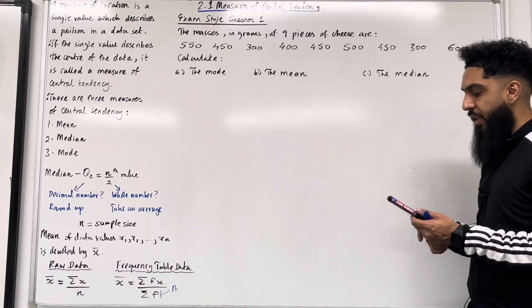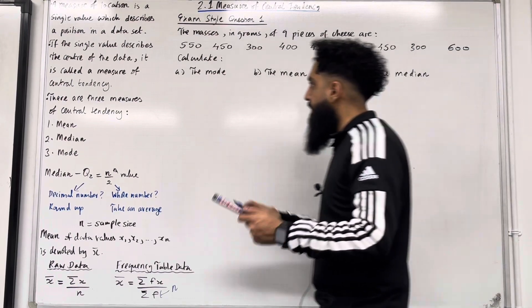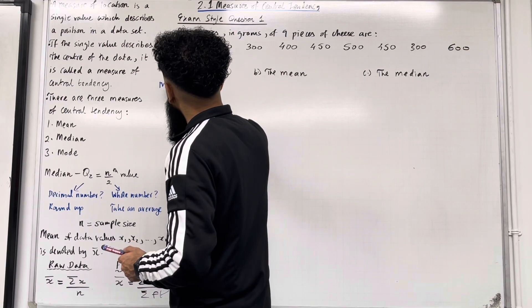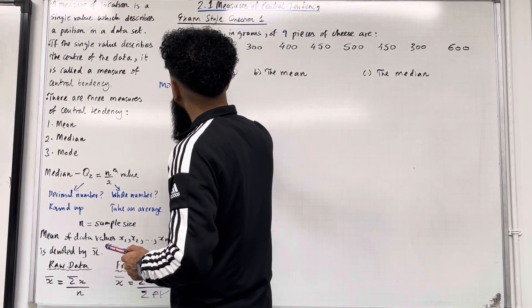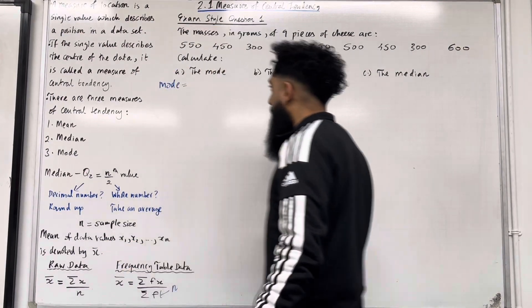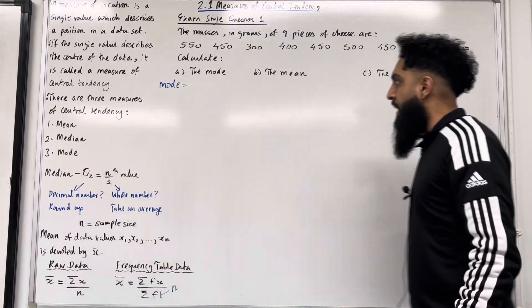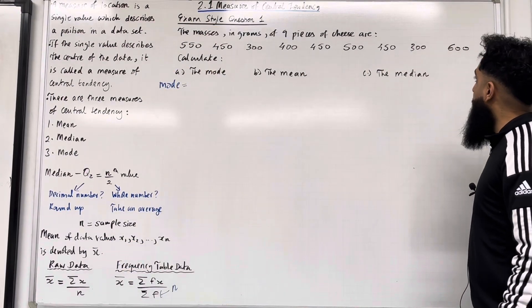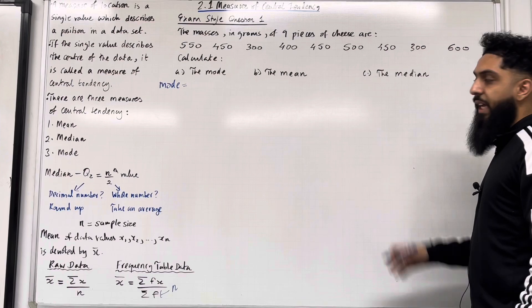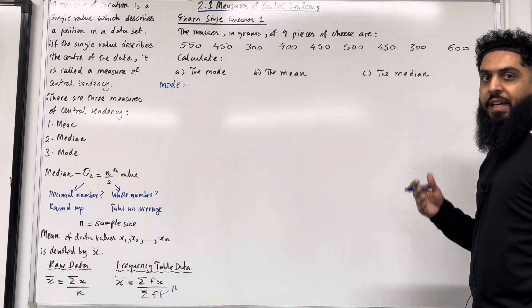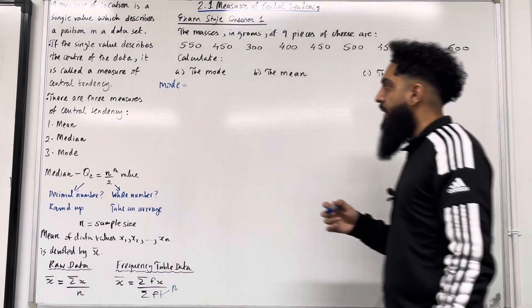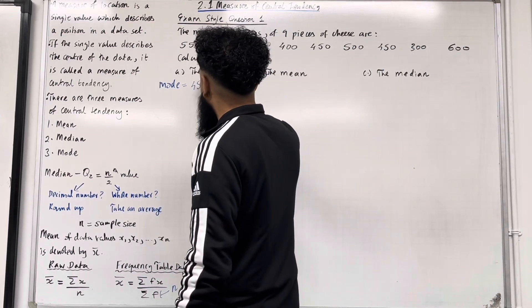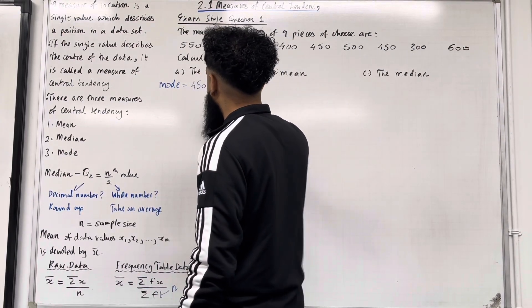Let's start off with the mode. The mode is the most popular value. We can see that the most popular value is 450, so the mode is 450 grams.